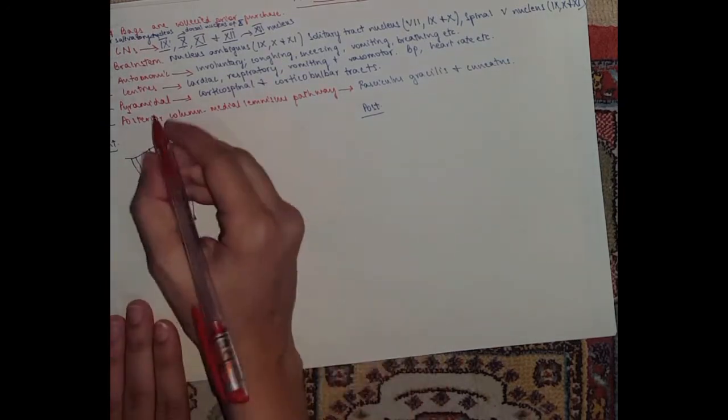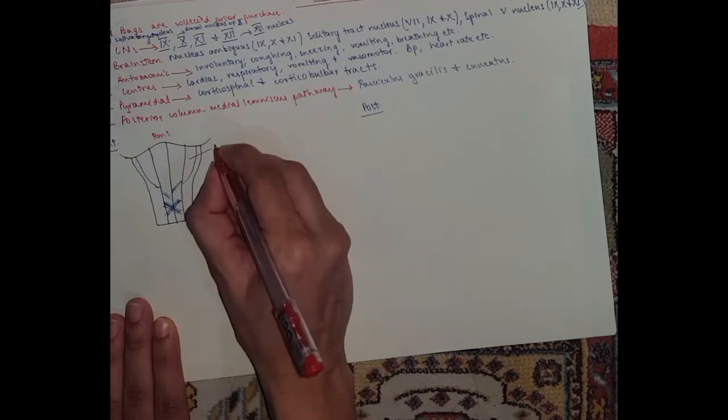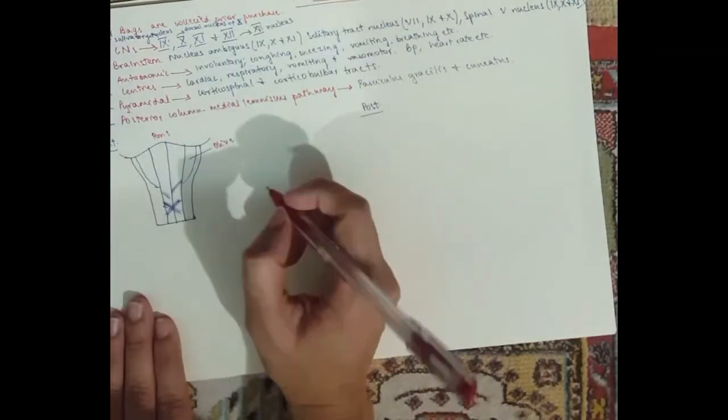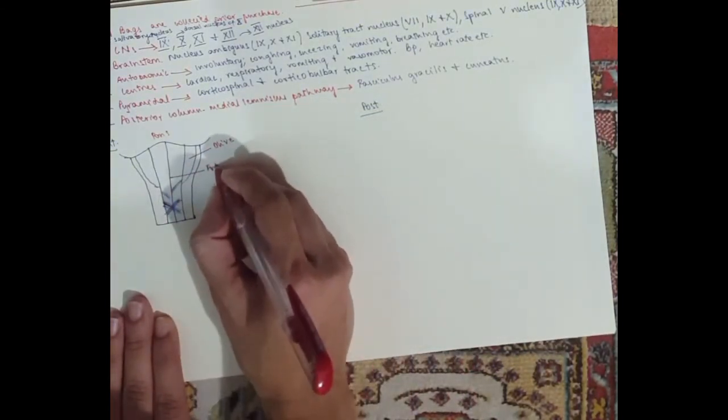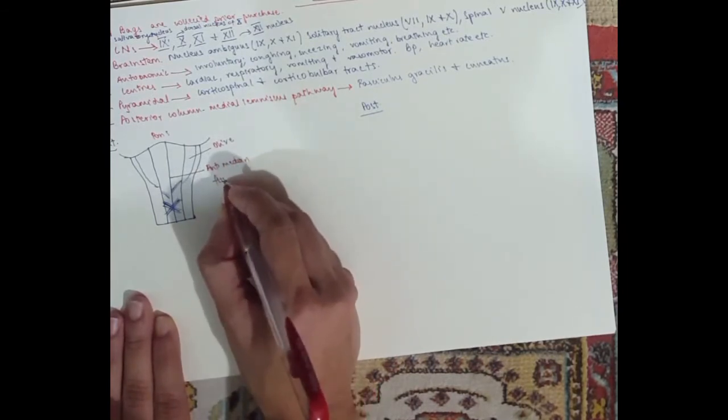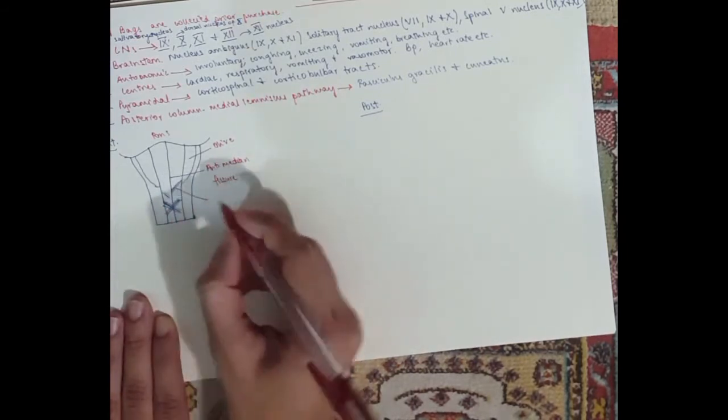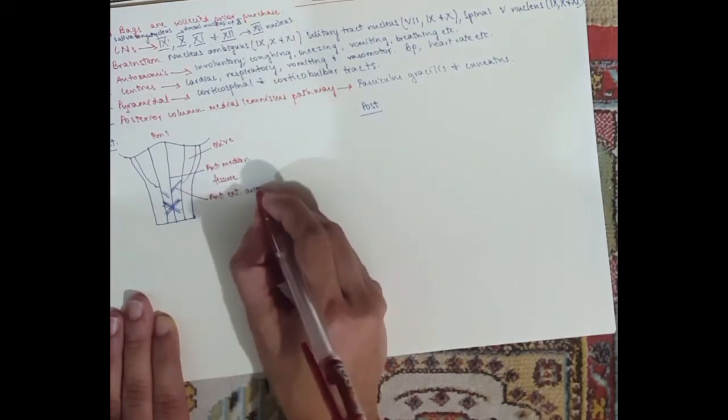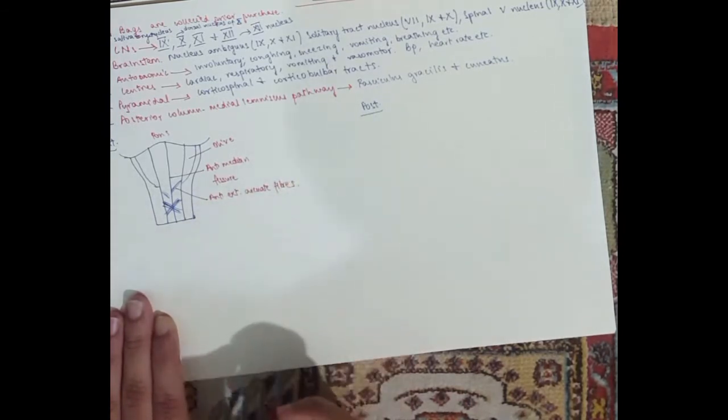So that's the anterior view. Here we've got the pons. This one, one, two, are the olives. They are caused by the inferior olivary nuclei. Then this one is the anterior median fissure. That has fibers coming out of it, and these fibers are called the anterior external arcuate fibers.